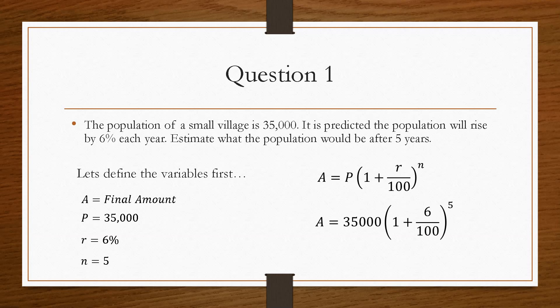Now all we have to do is substitute in these values into the equation, solve using a calculator, and that gives us an A value or a population estimate of 47,000.